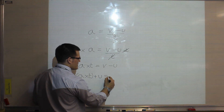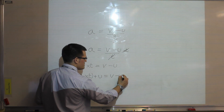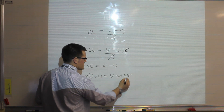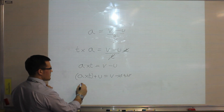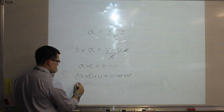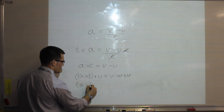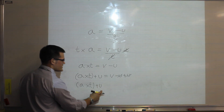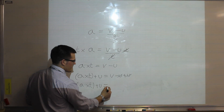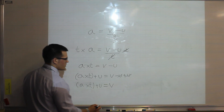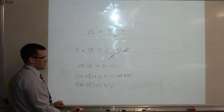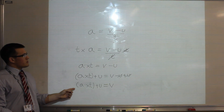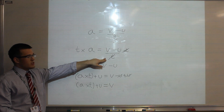If I do the same on this side, v minus u plus u, they now cancel out. So I'm left with an equation for v, which is a multiplied by t plus u — where u is the starting speed — will give me v, the final velocity. So that is an example of how to rearrange an equation where we have a denominator.